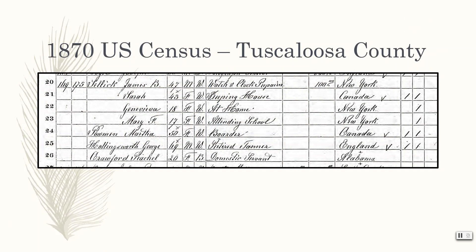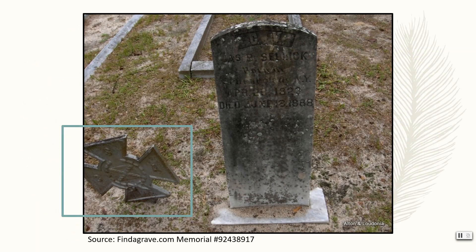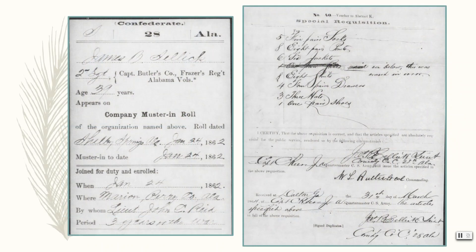Of course, we can also find Mr. Selleck in the federal census population schedule. Here is his entry from 1870, which shows his wife Sarah and his daughters Genevieve and Mary. Surprisingly, none of the Selleck family are native Southerners — James was born in New York, and his wife is originally from Canada. As far as I've been able to tell, James and Sarah left New York in the mid-1850s and initially settled in Perry County before moving to Tuscaloosa. Using linked records on Ancestry.com, I was able to find Mr. Selleck's Find a Grave memorial page, which illuminated another interesting piece of his life story. This marker next to his tombstone indicates he served in the Confederate Army. With our Fold3 subscription, available for free in the research room, I verified his service as a lieutenant in the 28th Alabama Infantry Regiment. I even found a copy of his signature on requisition forms he submitted to request supplies for the men of his company.